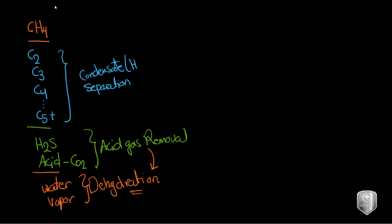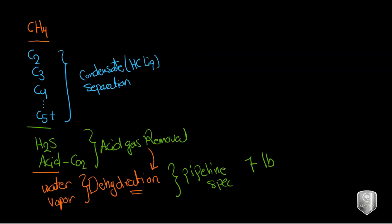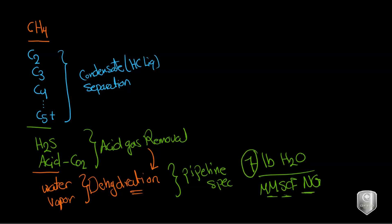We have to remove water vapor to meet a pipeline specification, similar to how we handle H2S and CO2. The pipeline spec is seven pounds of water per million standard cubic feet of natural gas. So for every million standard cubic feet of natural gas, you are only allowed to have seven pounds of water. This is the first key thing to know about dehydration.